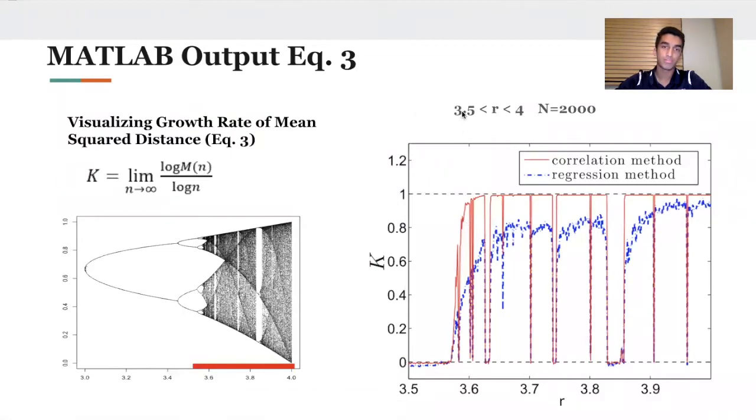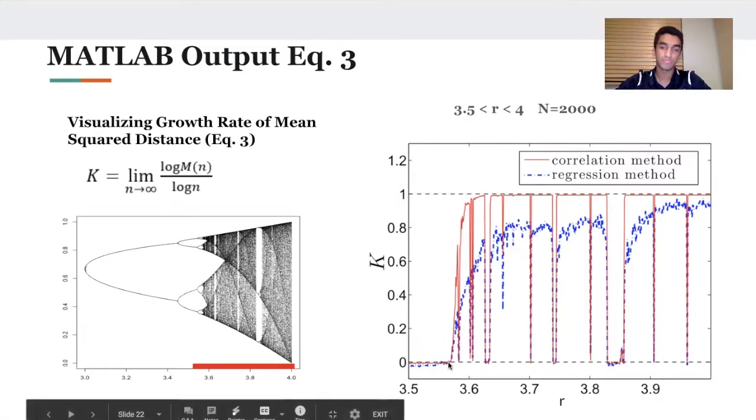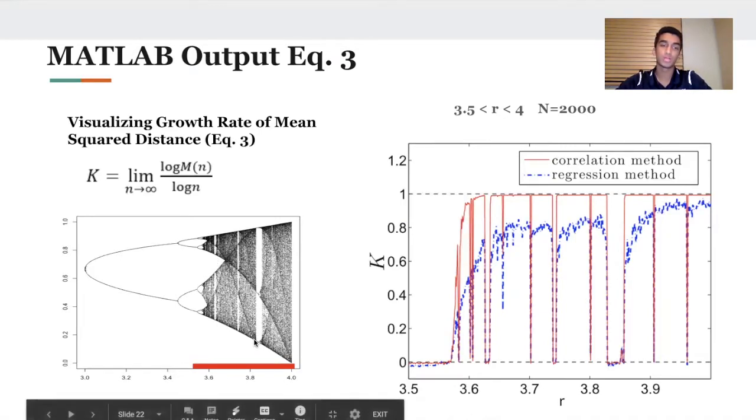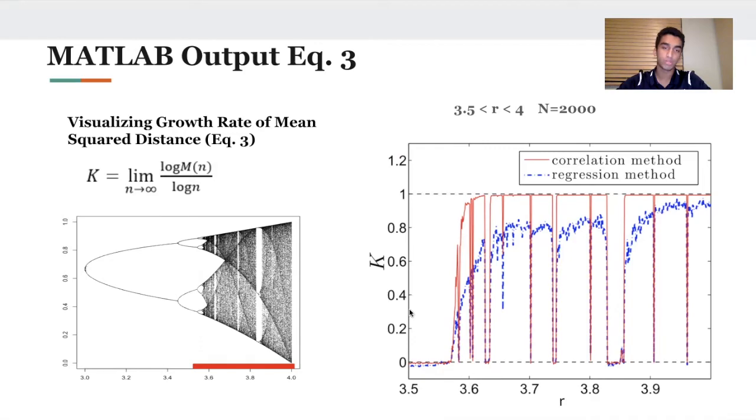This is going to observe the logistic map for the parameters of r between 3.5 and 4. What I want to highlight here is until the point 3.57, we'll see how our 0-1 test will return a value of 0. There's two main methods, the correlation and regression method. They correctly give you a value of k equals 0. As soon as the system turns chaotic, our test will immediately jump up to k equals 1. You may see how it drops down briefly for these brief regions of stability, which you'll see in these white lines devoid of shading. For this major one around 3.8, you can see how it returns back to k equals 0. I want to highlight how sensitive our test is, and also how it's not fooled by period doubling cascades. It immediately jumps up to k equals 1.